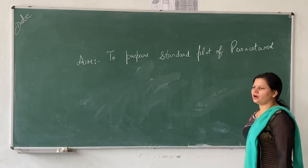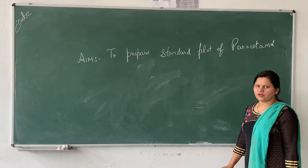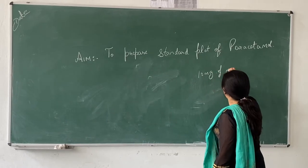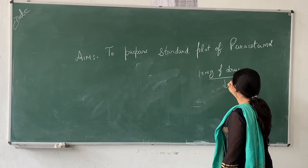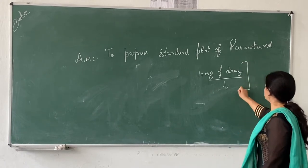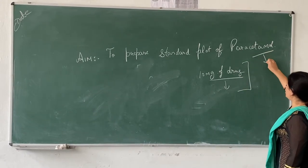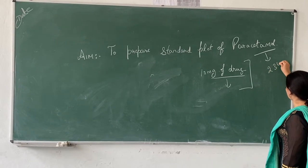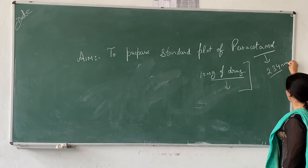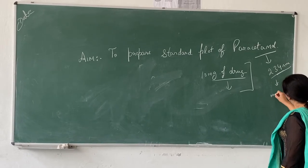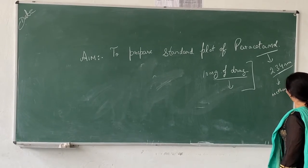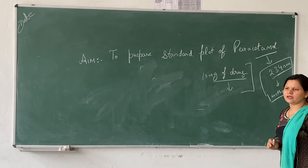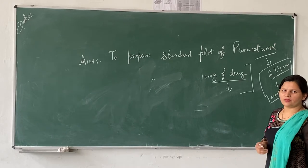For preparing the standard plot of paracetamol, we first have to weigh 10 mg of the pure drug. And we have to first check the monograph — what is the lambda max of the paracetamol? The lambda max of paracetamol is 234 nm and it is reported in the solvent methanol. So first we have to check the monograph of that particular drug for which we are preparing the standard plot.